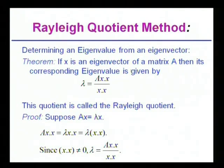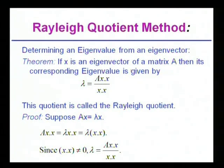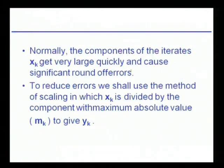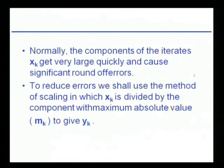If x is an eigenvector of a matrix A, then its corresponding eigenvalue is given by lambda = (Ax · x) / (x · x), the Rayleigh quotient. The numerator is lambda·(x·x), and the denominator is (x·x). Since x ≠ 0, by the axiom of inner product (x·x) ≠ 0, so we get lambda = (Ax · x) / (x · x). In practice, iterating xk can produce very large vectors causing significant round-off errors. To reduce errors, we use scaling, dividing xk by the component with maximum absolute value.